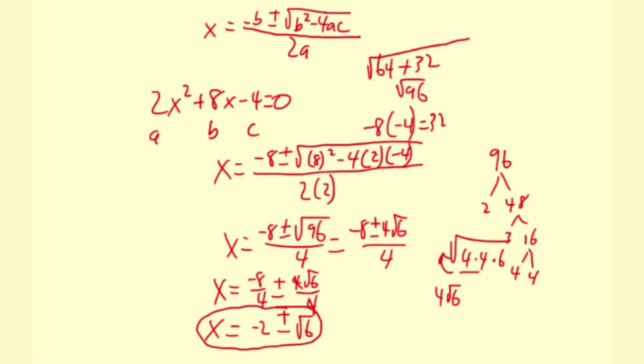And there are other variations of this. Sometimes you get a perfect square, so you get integer answers or fraction answers. Sometimes you end up with the square root of a negative number, which means you have two imaginary solutions.